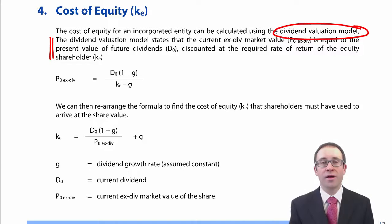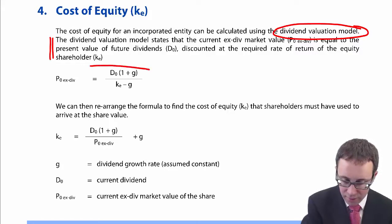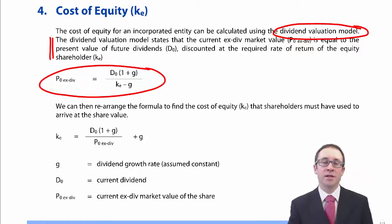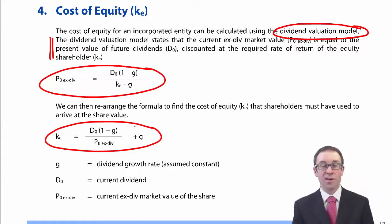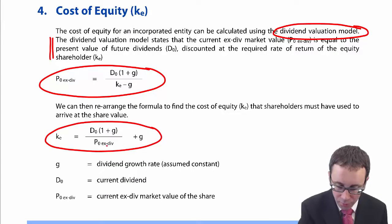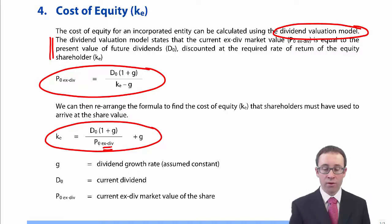If we look at the formulas derived from working out the IRR of the cash flows, first of all there's the price of the share: D0 times (1 plus G) over KE minus G. More importantly, the cost of equity formula is: D0 times (1 plus G) over P0 XDIV, plus G. G is the dividend growth rate as a percentage, expressed as a decimal — so a 10% growth rate becomes 0.1 when you put it into the formula.